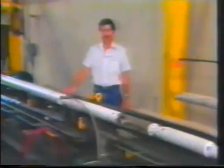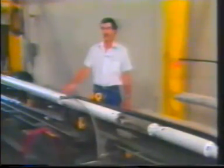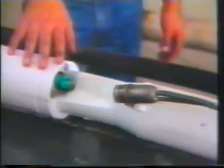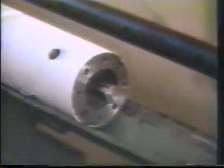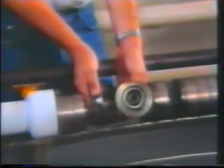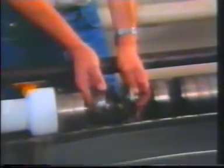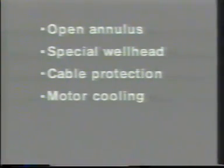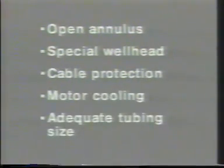Wells that produce large volumes of low gas-liquid ratio fluids are good candidates for electrical submersible pumps. The critical limitation is casing size, which limits the size of the pump that can be lowered to the bottom of the well, and thus its horsepower and capacity. Submersible pump completions must have an open annulus, a special wellhead for sealing around the power supply cable, adequate cable protection, adequate cooling of the motor, and adequately sized tubing for handling large volumes. Hydraulic and plunger lift installations are covered in your manual, and details on the equipment design of each artificial lift method are found in other modules of the video library.